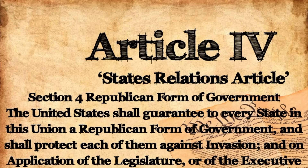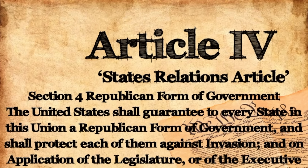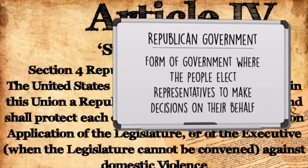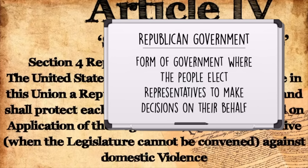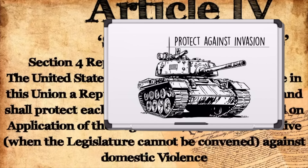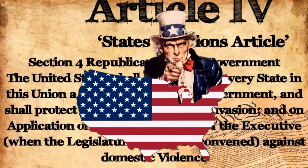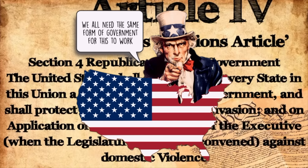Finally, Section 4 addresses the Guarantee Clause. It ensures that every state will have a Republican form of government and be protected against invasion and domestic violence. This clause underscores the federal government's role in maintaining order and democracy, making sure all states have the same or similar form of government, and that the central government will protect the states against invasion.